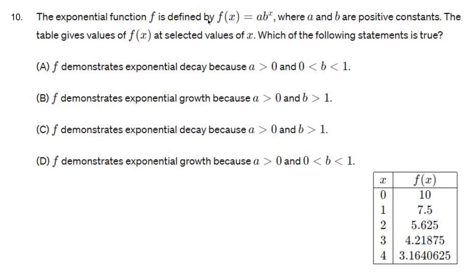The exponential function f is defined by f of x equals a times b to the x where a and b are positive constants. The table gives the values of f of x at selected values of x. Which of the following statements are true?